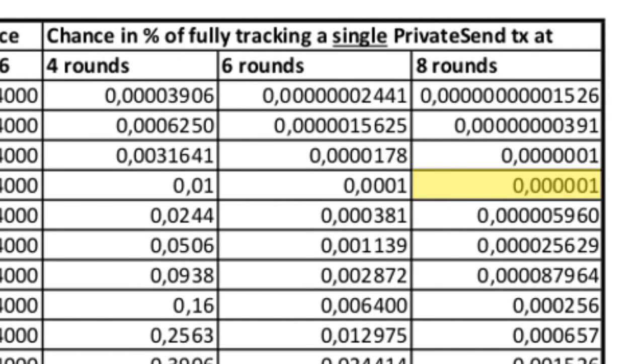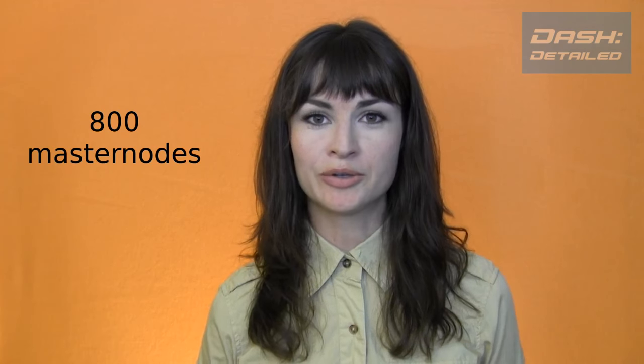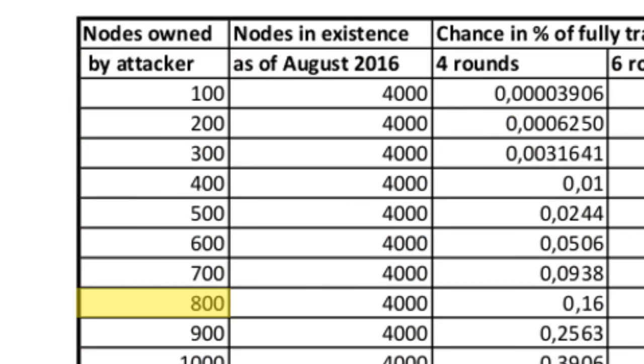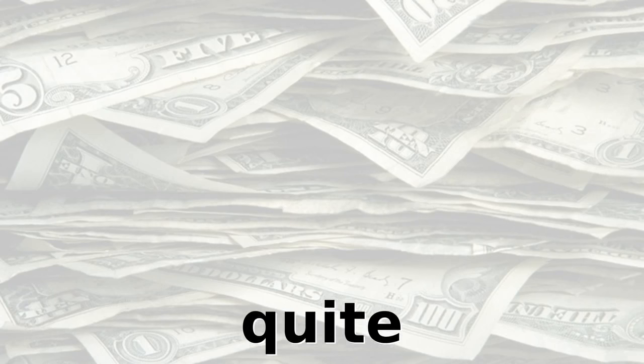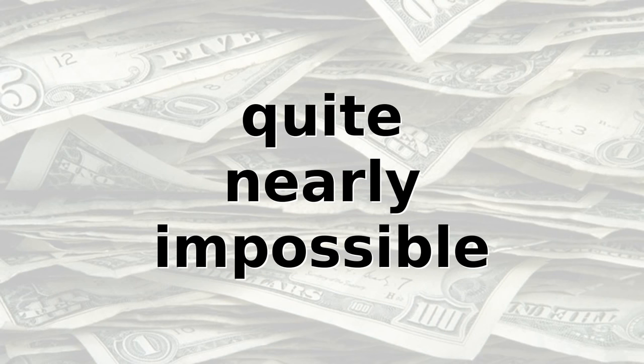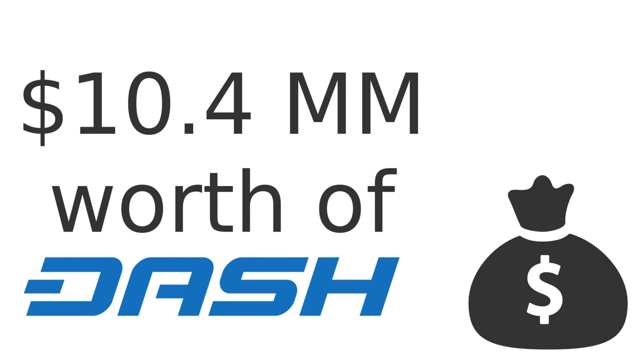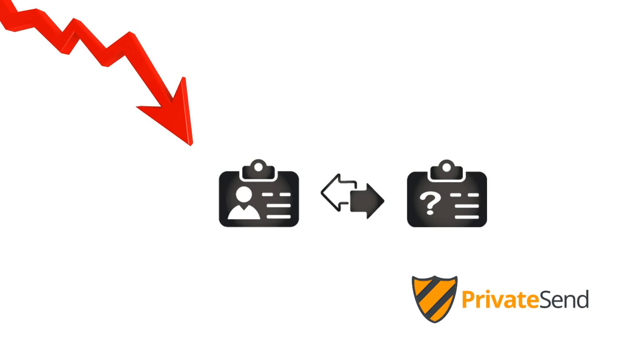So with an outside attack essentially infeasible, that leaves only one kind: an inside attack — a Dash masternode operator or operators essentially breaking bad. What if someone owned 400 masternodes, or 10% of the network, and their chosen Sybil attack vector were the de-anonymization of an eight-round mixed PrivateSend transaction? Their chances of doing so? One millionth of one percent. But let's get crazy — what if someone owned 800 masternodes, 20% of the network? Then what would their chances be to de-anonymize an eight-round mixed PrivateSend transaction? Less than 30,000ths of a percent. So what would this quite nearly impossible Sybil attack cost our attacker? Just $10.4 million worth of his own Dash, as a crash in the price would surely follow the de-anonymization of a high-security PrivateSend transaction.